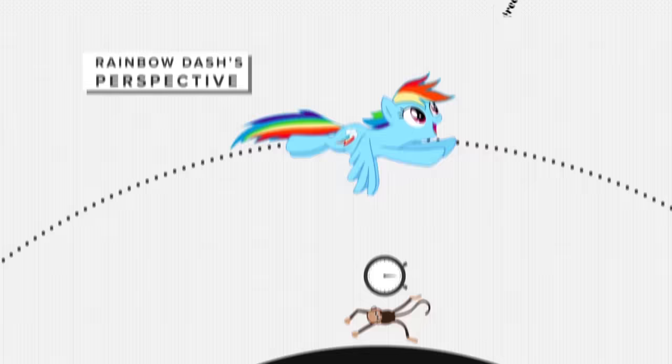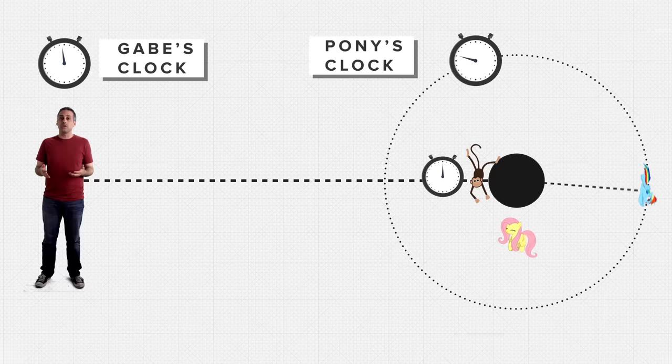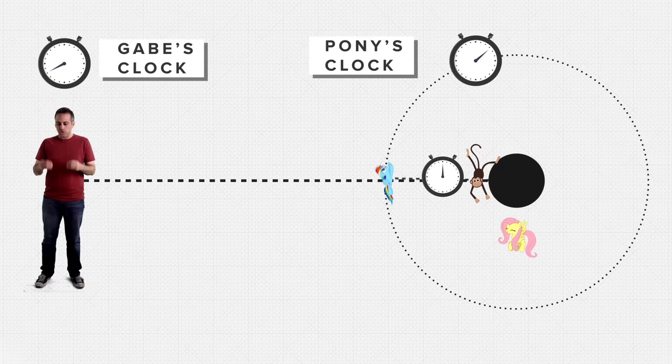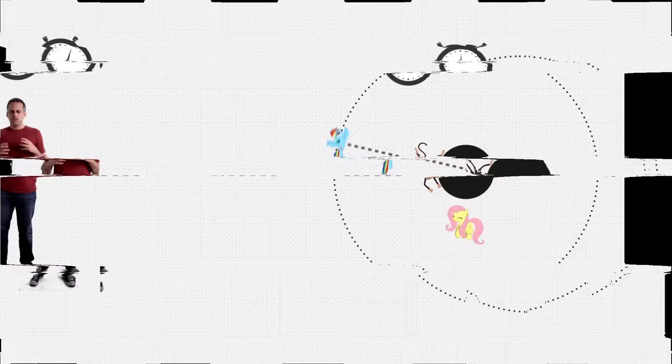And the pony agrees with me. So does another pony that's using powerful rockets to hover much closer to the black hole's edge. In fact, so would any observer, inertial or otherwise, who is always outside the black hole's edge. Even if the ponies and I were immortal, all of us would agree that the monkey's life just doesn't progress past this frozen moment. The monkey knows he crosses the edge. I mean, he was there. But everyone else insists that he never does, even after an infinite amount of time on any of our clocks.